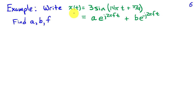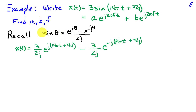Let's conclude with an example. Take x of t as 3 sine of (14 pi t plus pi over 4) and write it as a sum of a positive frequency and a negative frequency complex sinusoid. The goal is to find a — the coefficient of the positive frequency term — b — the coefficient of the negative frequency term — and the frequency f. The approach follows that of the cosine, using the fact that sine of theta equals e to the j theta minus e to the minus j theta, divided by 2j.